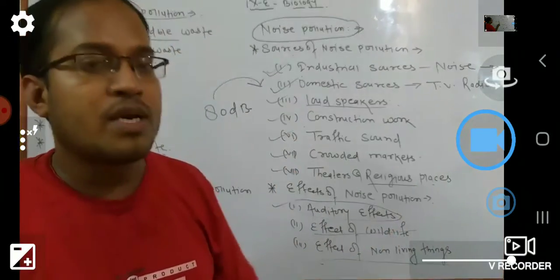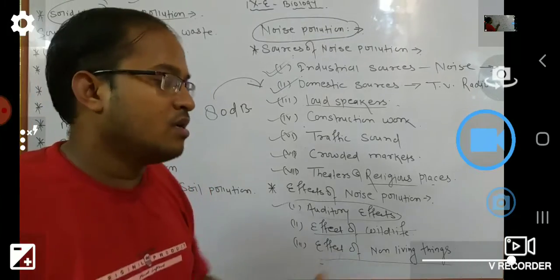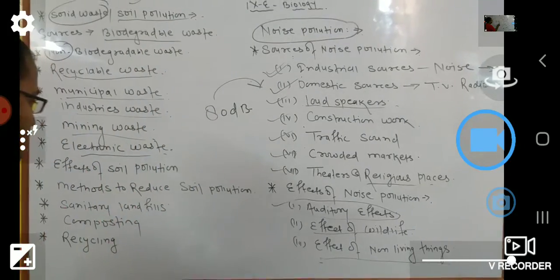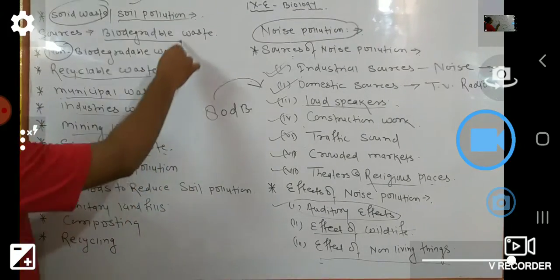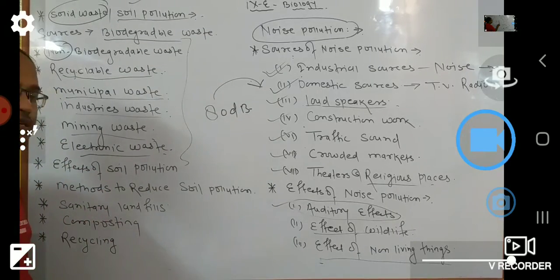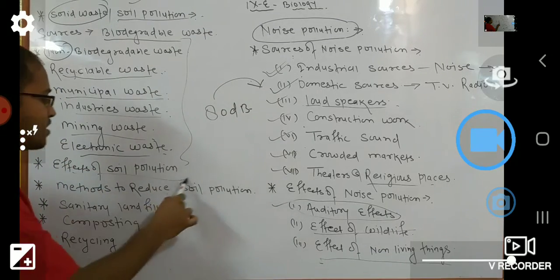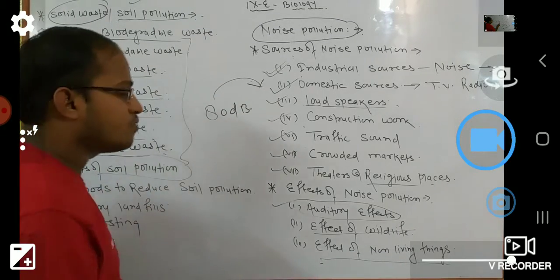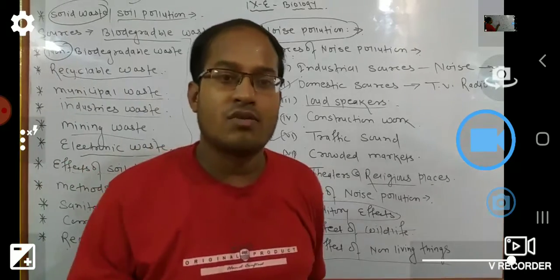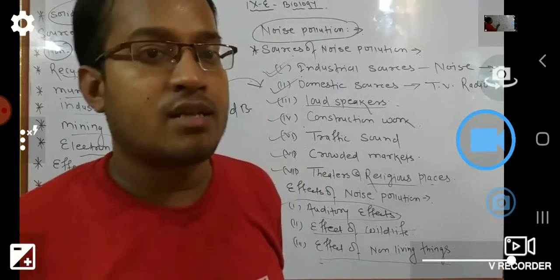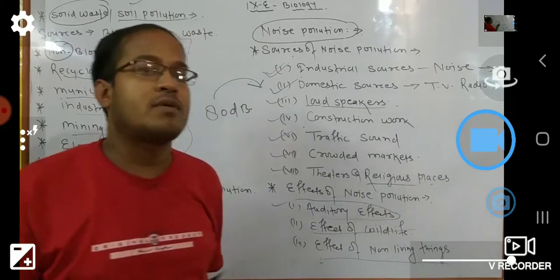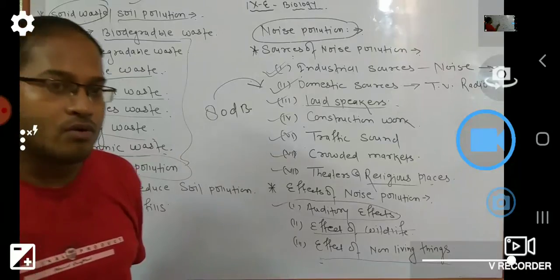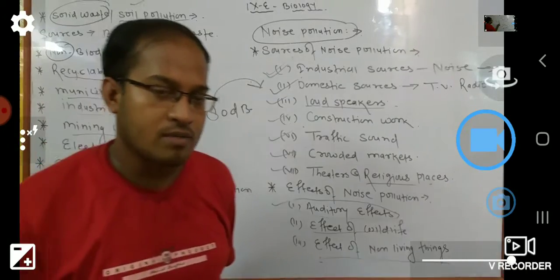Soil pollution also creates other forms of soil pollution. The main effect is that soil fertility is destroyed, and the soil becomes unable to produce any plants for a longer period of time.